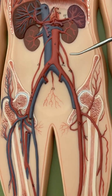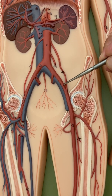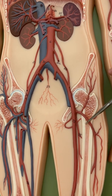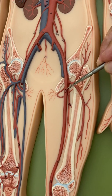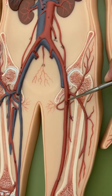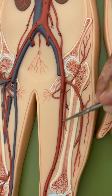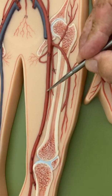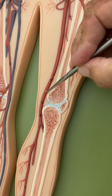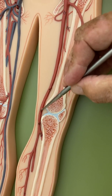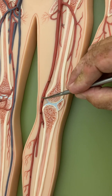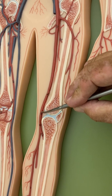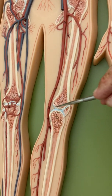Following down the legs: the external iliac continues until it reaches the femur, at which point it's called the femoral artery — same road, new name. It changes name again when it comes behind the knee: since that's the popliteal region, it becomes the popliteal artery.